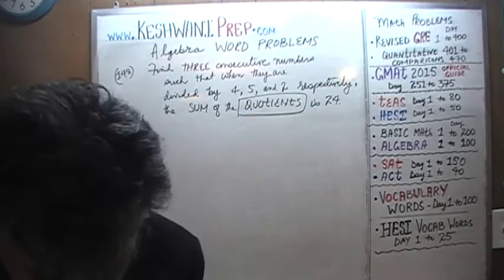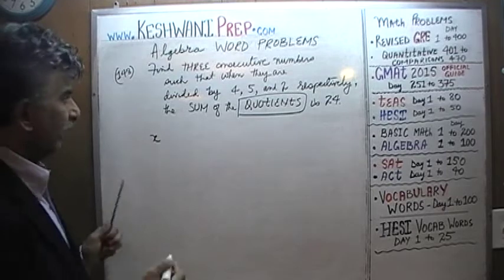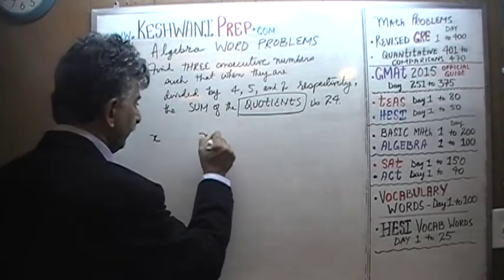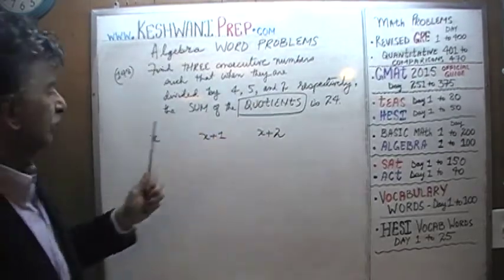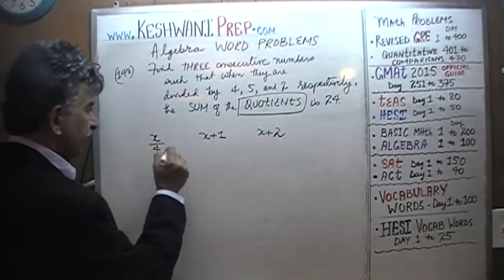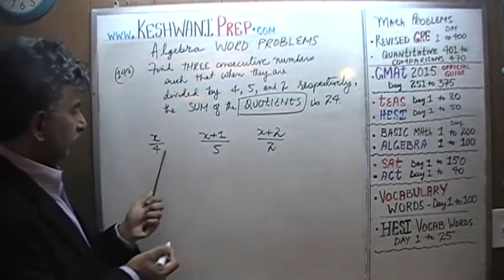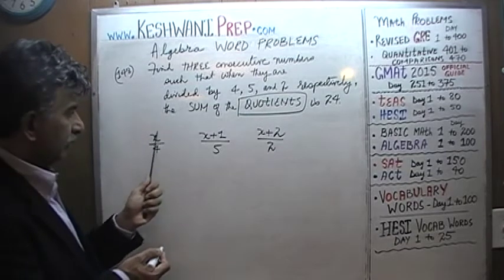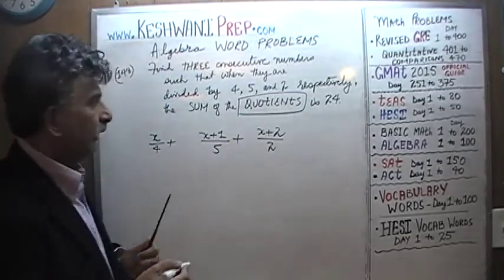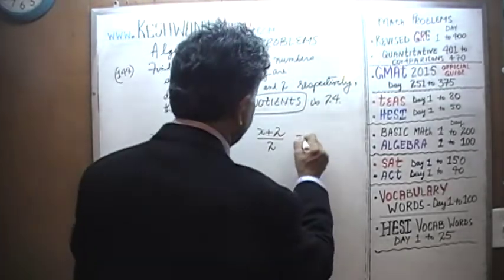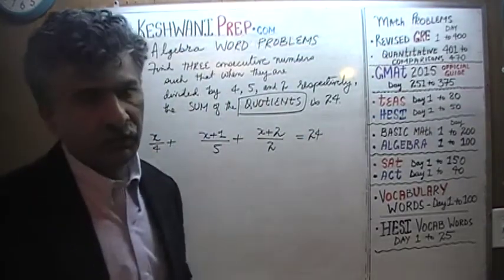Let's find the numbers. Let's call the first one x. If the first one is x, the next one is x plus one, and the one after that is x plus two. We are told that when we divide them by four, five, and two respectively, the sum of those three quotients equals 24. All we have to do now is solve this simple linear equation.